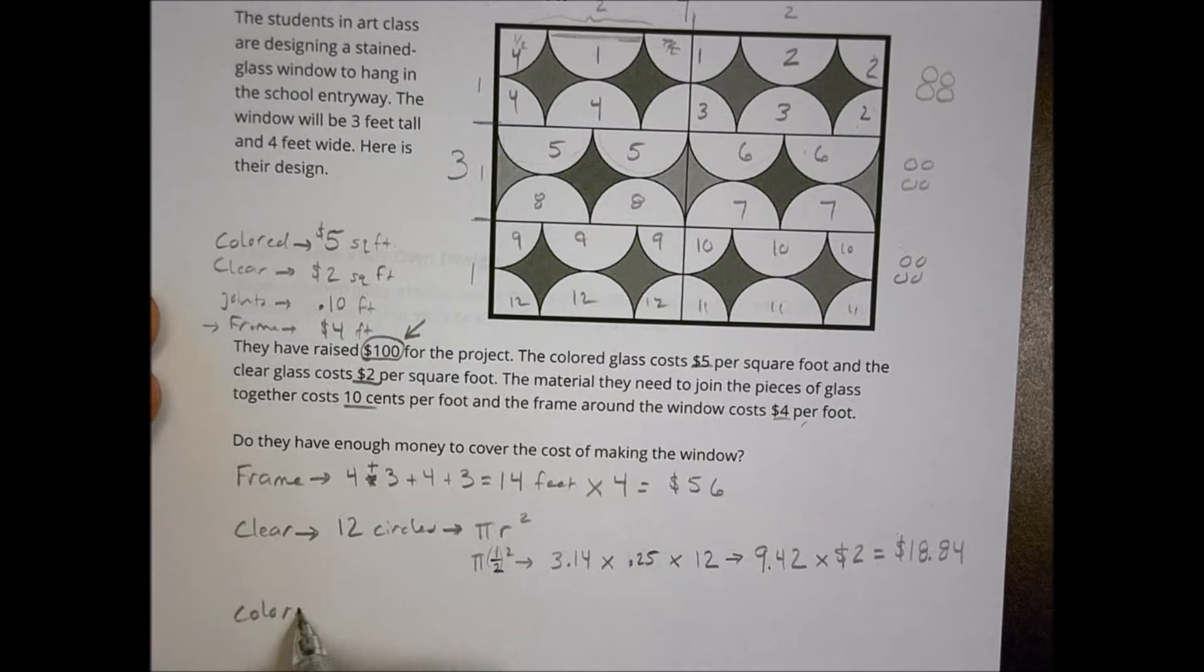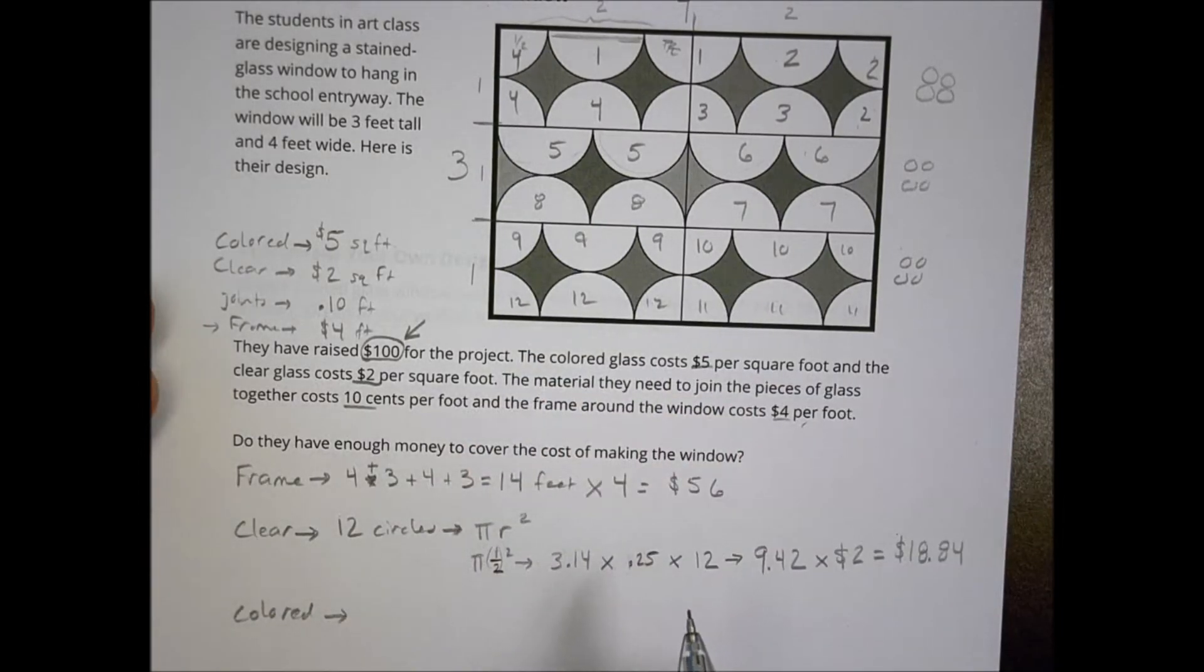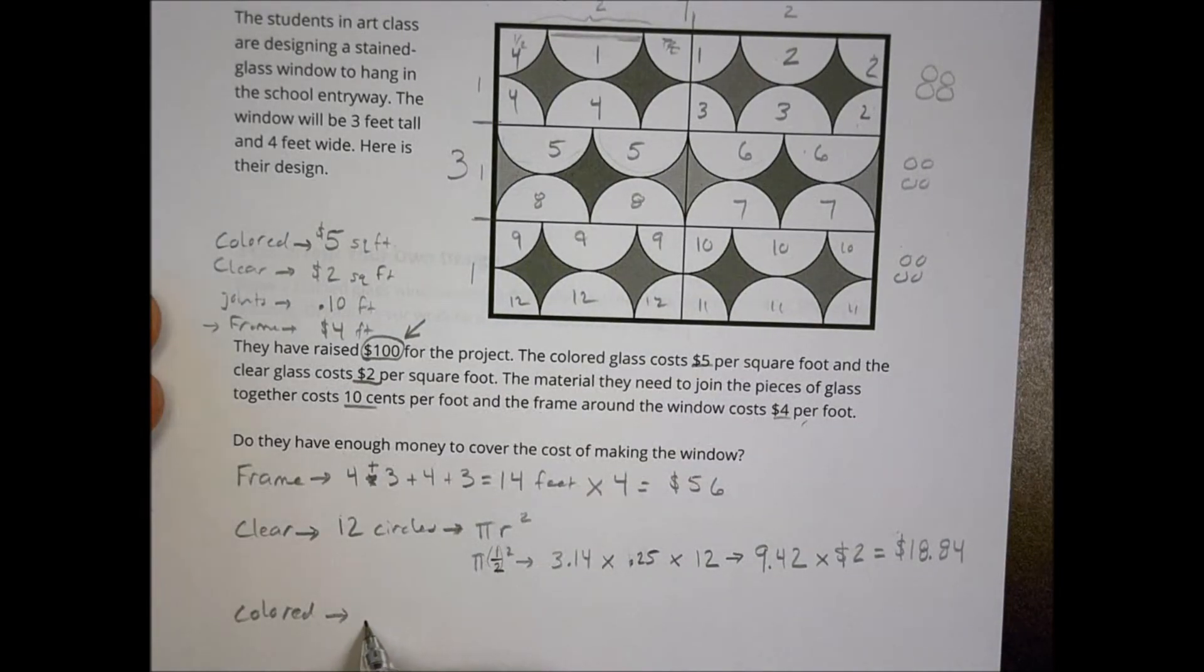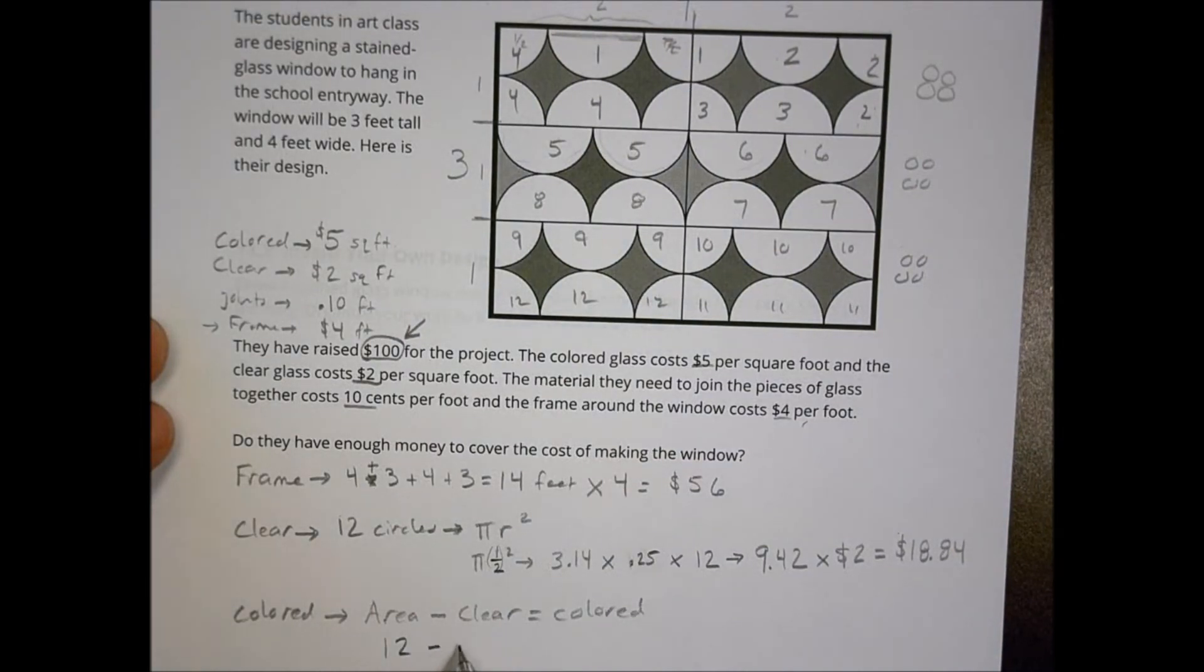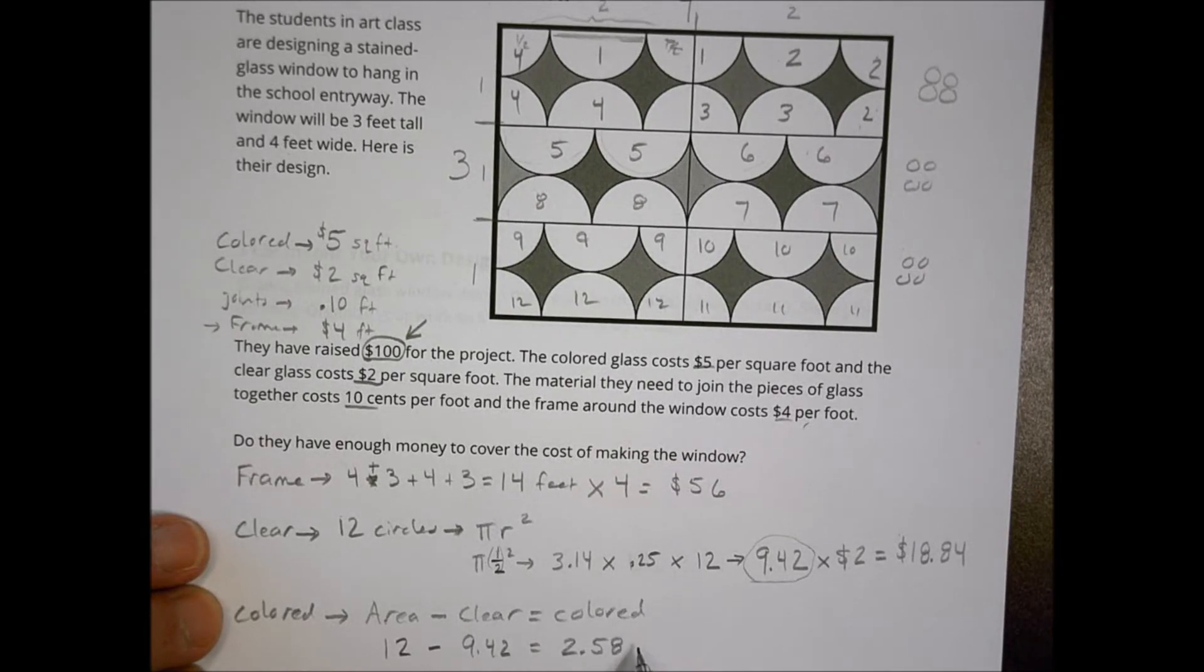Now the colored glass is a little different because I can't really see if those are circles or not. That's just what's left. But what I can do is I can take the frame area and I can subtract from it the clear area. And that's going to equal the space left over for the colored area. Okay? So the area of the whole thing is 4 times 3, which is 12. And I subtract from that the area of the clear, 9.42. And so 12 minus 9.42 is equal to 2.58 feet squared. That's my colored area. Now the cost for the colored glass is $5 a square foot. So I'm going to multiply 2.58 times 5. When I multiply 2.58 times 5, I end up with $12.90.